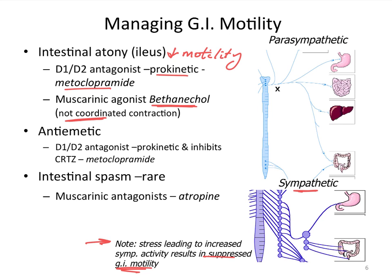Metoclopramide has a dual mechanism as an anti-emetic: peripherally it has a prokinetic effect, opening the pyloric sphincter and allowing ingesta to move from stomach to intestine; it also blocks the chemoreceptor trigger zone that detects circulating toxins and signals the emetic center. This drug must typically be given very frequently, best by constant rate infusion, so it's not easily used outside the clinic.